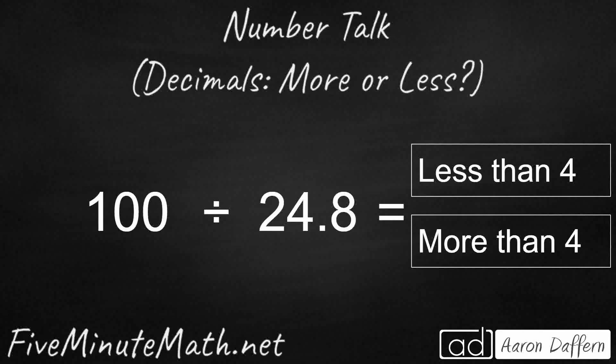All right, so we're dividing 100 by 24.8. So I want to estimate this real quick, and I want to round to the nearest whole number. All right, so if I remember the algorithm, I could think, okay, look at the number next to it, and if it's 5 or more, it's going to go up.